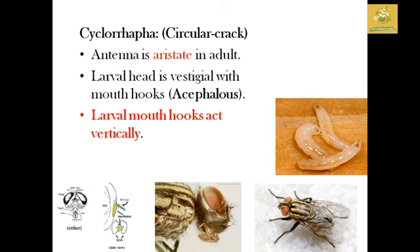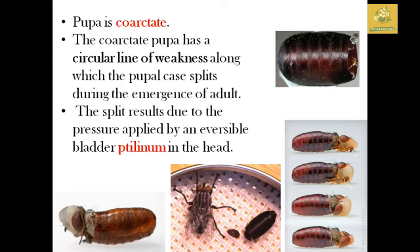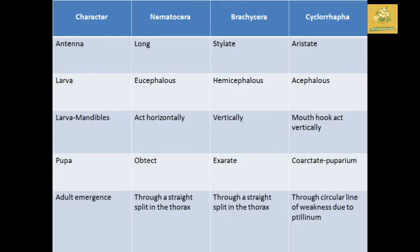The third suborder is Cyclorrhapha, where they have a circular crack. The antenna is aristate in adults. The larval head is vestigial with mouth hooks, known as acephalous. Larval mouth hooks act vertically. The pupa is coarctate, and the puparium has a circular line of weakness along which it splits during adult emergence, due to pressure applied by an eversible bladder — the ptilinum — on the head.